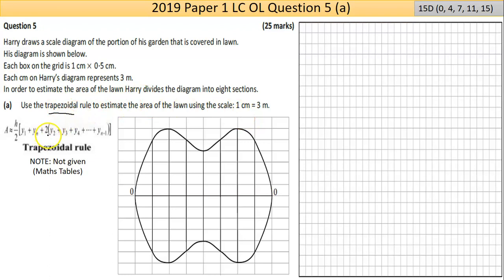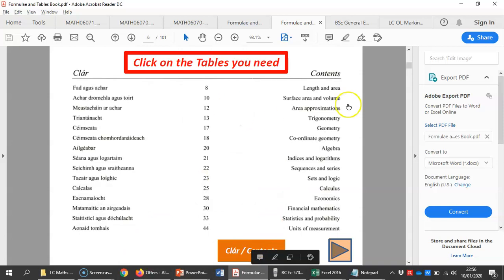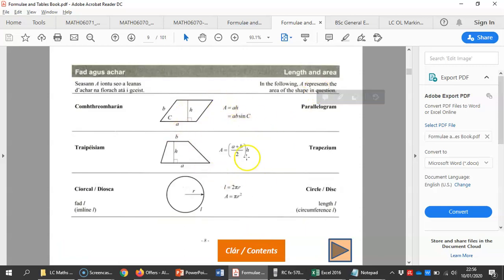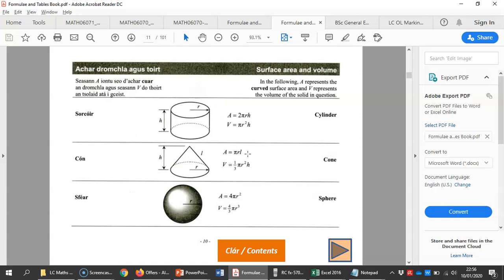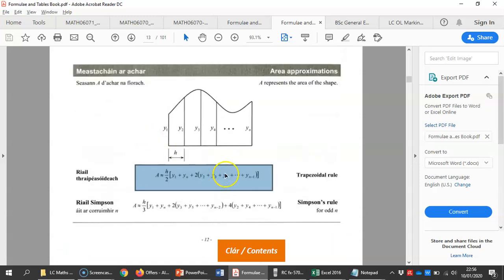The trapezoidal rule is given to you in the maths tables. I've just taken a screen print of it and put it into the question here, but it isn't given to you on the exam paper. In the exam you have to remember that it's in the maths tables. If you have your maths tables open and scroll down through each of the sections, after a few pages you'll come to the trapezoidal rule.